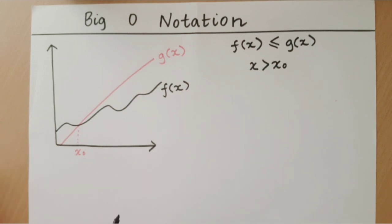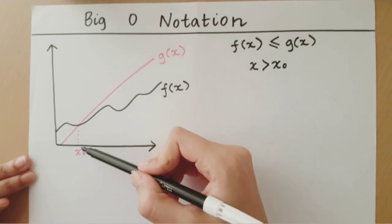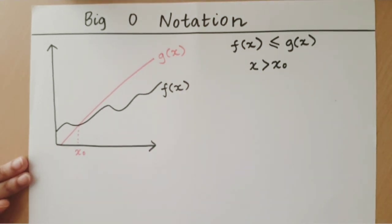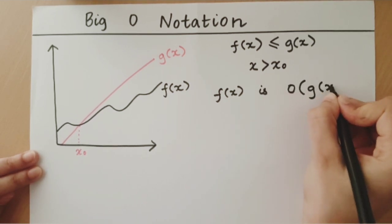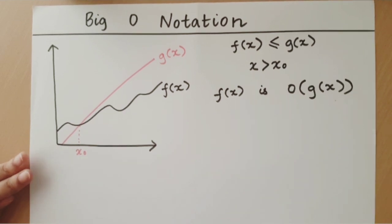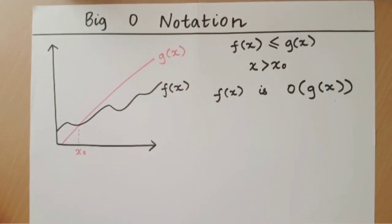As you can see this holds for this graph. g of x will continue to be greater than f of x at all points after a point x0. So, let us see how this would work in a few examples. We say that f of x is order of g of x. This would be the big O notation for f of x. g of x essentially gives the upper bound on the growth of f of x because it bounds the function. This is important because it gives us an idea about how the function is going to grow.